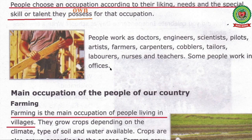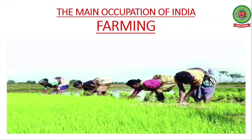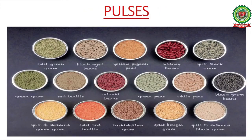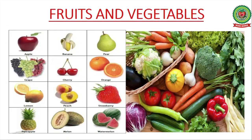Next topic: the main occupation of the people of our country, that is farming. Farming is the act of planting seeds and growing edible plants. It is the main occupation of the majority of the people in India. They cultivate lands and produce food grains, pulses, fruits and vegetables. These people are called farmers.